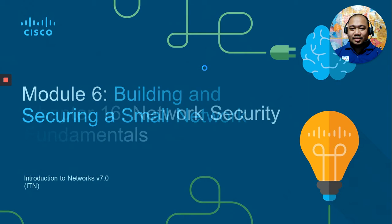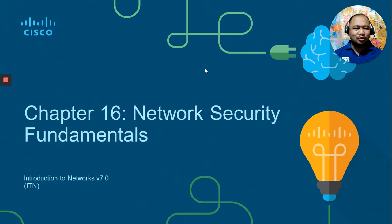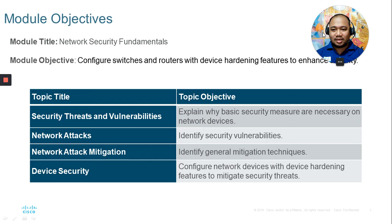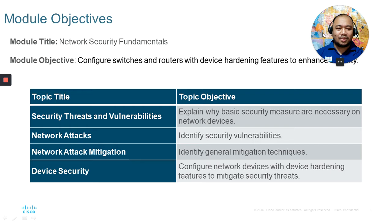We are now moving to the last part of this module under Chapter 16, Network Security Fundamentals. Let me tell you about the objectives of this chapter. First, explain why basic security measures are necessary on network devices. Second, identify security vulnerabilities. Third, identify general mitigation techniques. And lastly, configure network devices with device hardening features to mitigate security threats.